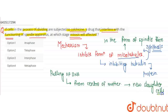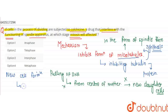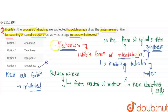अब यहां पर अगर microtubules नहीं बनते तो daughter cells नहीं बनेंगे, तो यह process पूरी तरह रुक जाएगी, और new cell formation will get inhibited. तो हम लिख सकते हैं, new cell formation will not occur. तो यह inhibition होता है metaphase में।